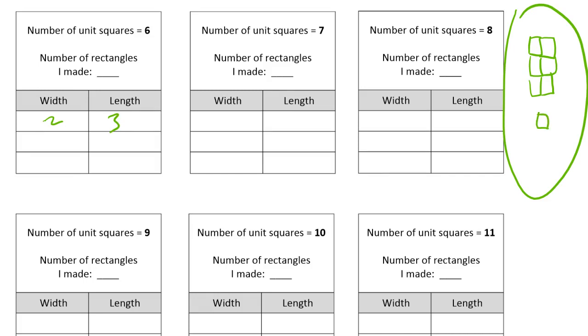You can make one that's six rows of one. Well actually, length should be one. Length is usually the longer of the two numbers. So if it's a one by six, then the length is going to be six and the width will be one.